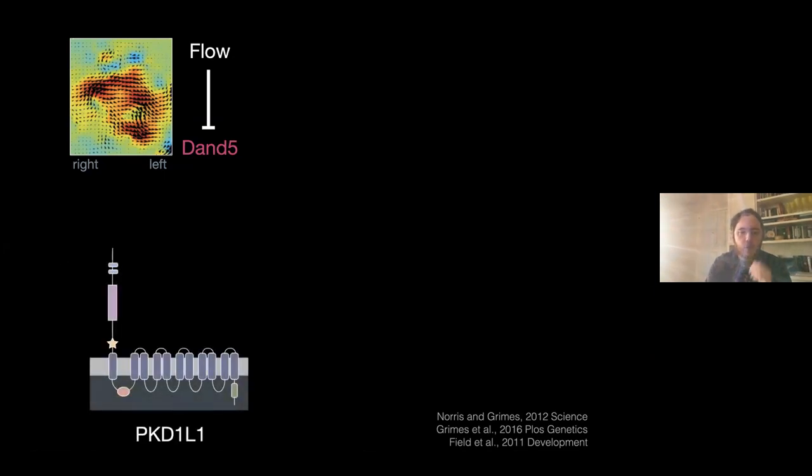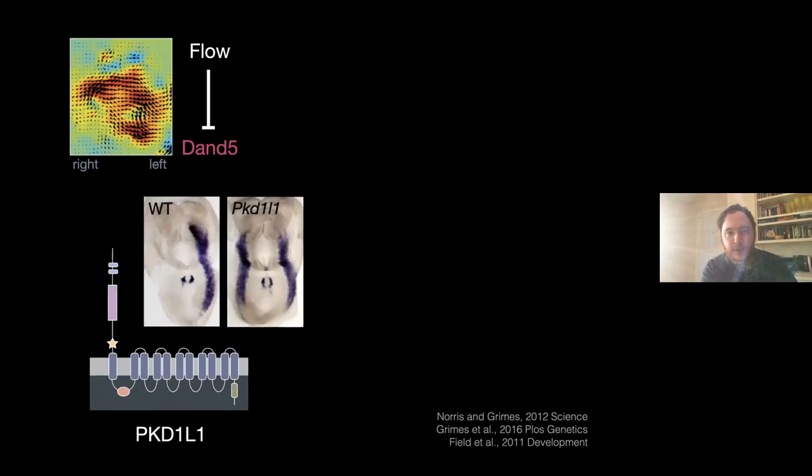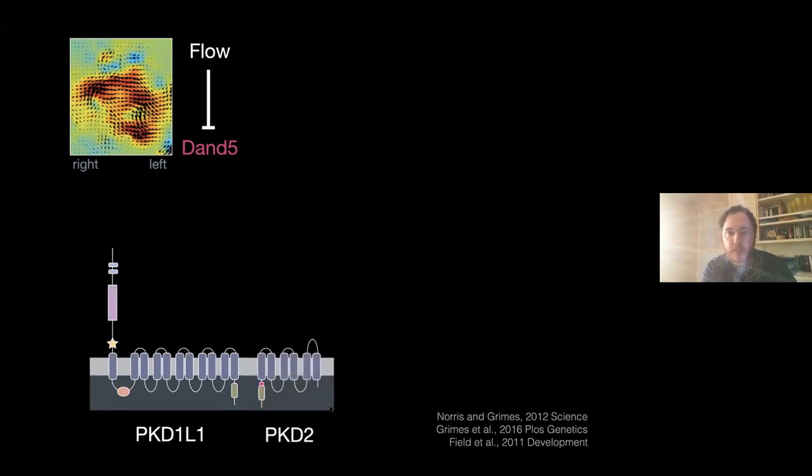In Dominic Norris' lab, we were thinking about other genes that might play a role because PKD2 doesn't feel like it's truly sensing a flow signal—it's more like an effector channel. Doing mouse genetics, we came upon PKD1-like-1, a member of the polycystin family. It's a very large transmembrane protein with many distinct domains in its extracellular portion. It has a very striking left-right patterning defect. In wild type, nodal is nicely on the left. In PKD1-like-1 mutants, it's on both sides, so symmetry breaking has not occurred.